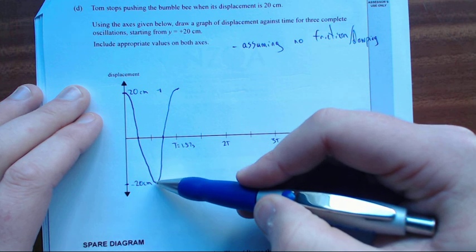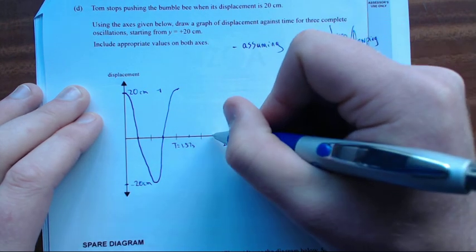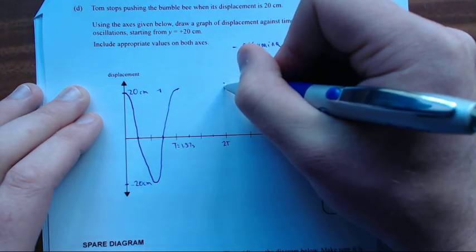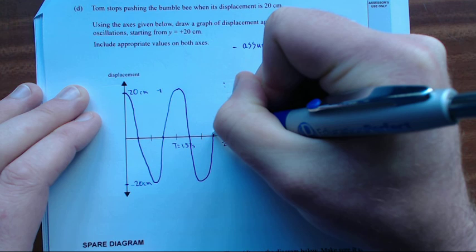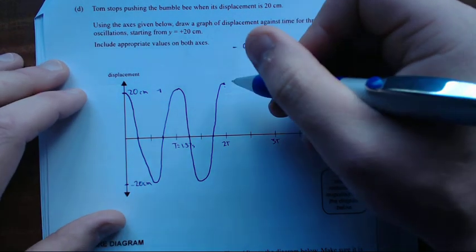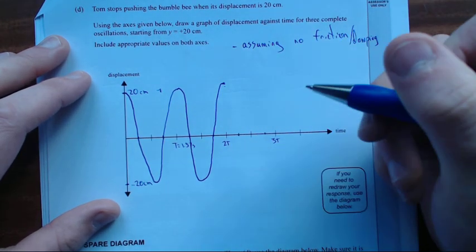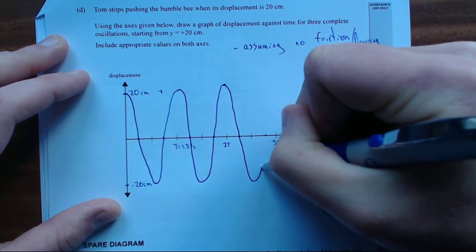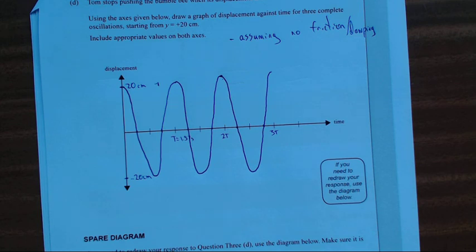That's one full cycle. So I've gone from positive 20 centimeters down to negative 20 centimeters, back up and back to where I started. I need to do that again. So I'm going to cut through the axis here and back up through the axis here. Try and be as neat as you possibly can. That is two cycles. I should really be using a ruler, but it's enough. And then one more cycle, so I'm going to cut through the axis here, cut through the axis here, all the way down to minus 20, all the way up to positive 20. So that is with no damping whatsoever.